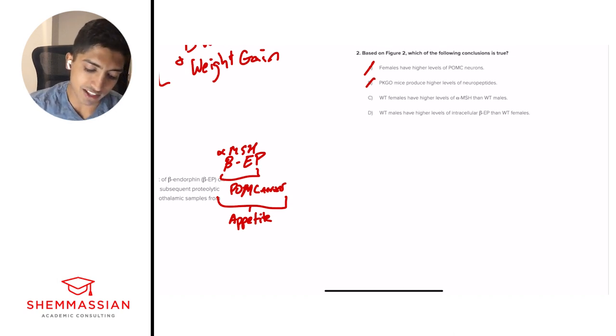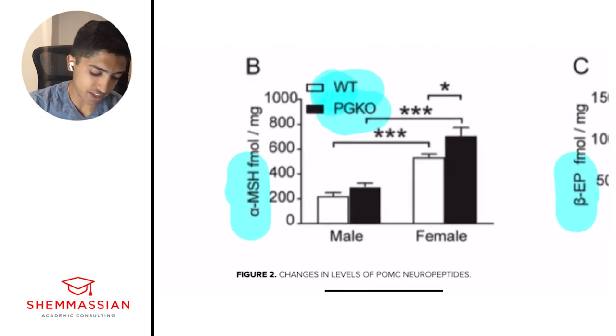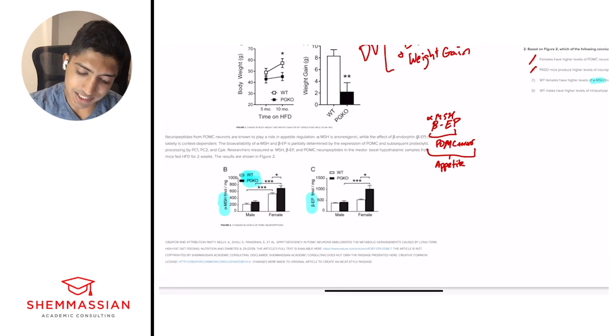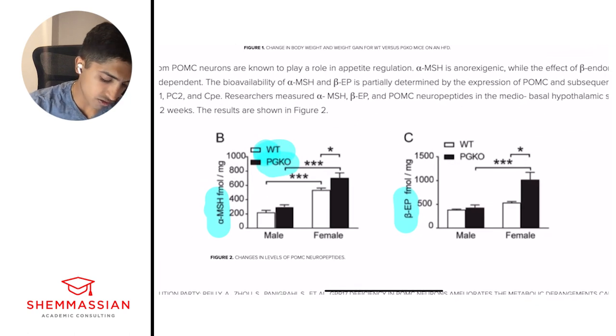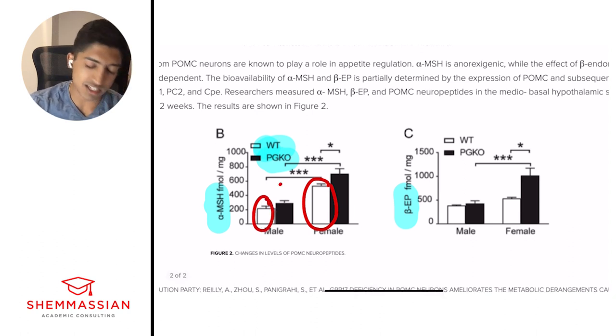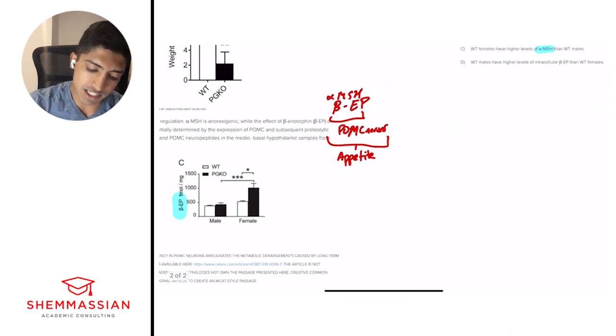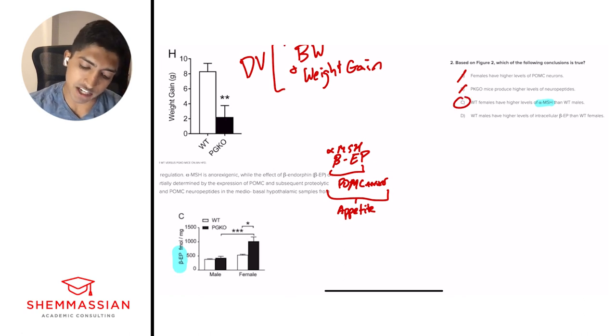Wild-type females have higher levels of alpha MSH than wild-type males. So what are we looking at? We're looking at alpha MSH levels. And which graph is that? That is this first graph, the alpha MSH. And we're looking at whether wild-type females have higher levels than wild-type males. So wild-type, what color is it? That's the white bar. So this one, is that greater than the wild-type males? And yes, we see that statistical significance. We see those three stars. And so this is the exact situation of something that is true. We see that wild-type females have higher levels of alpha MSH than wild-type males.